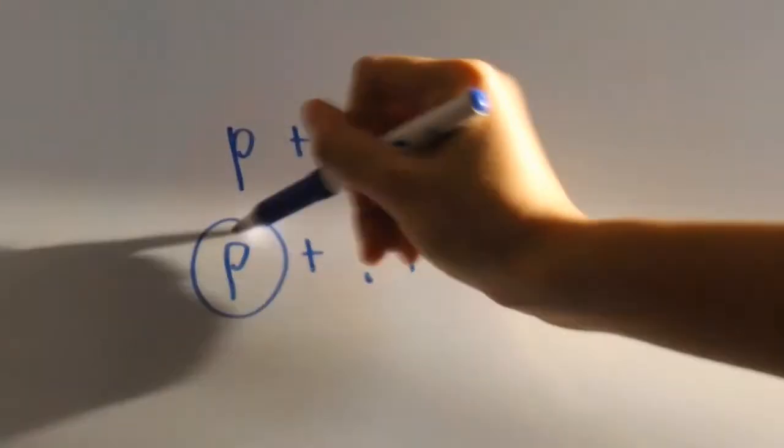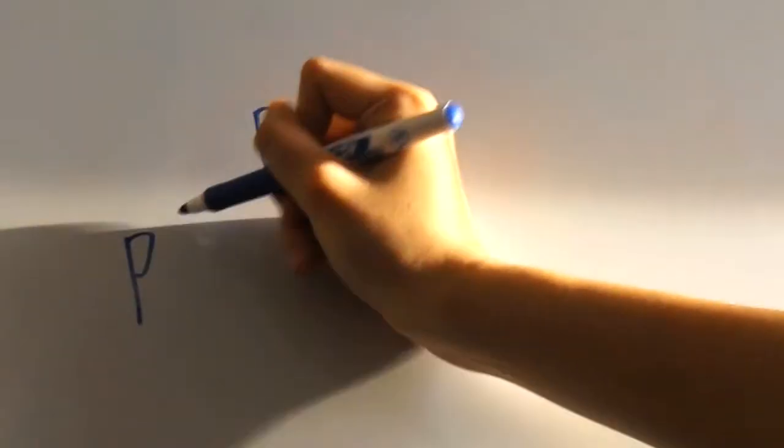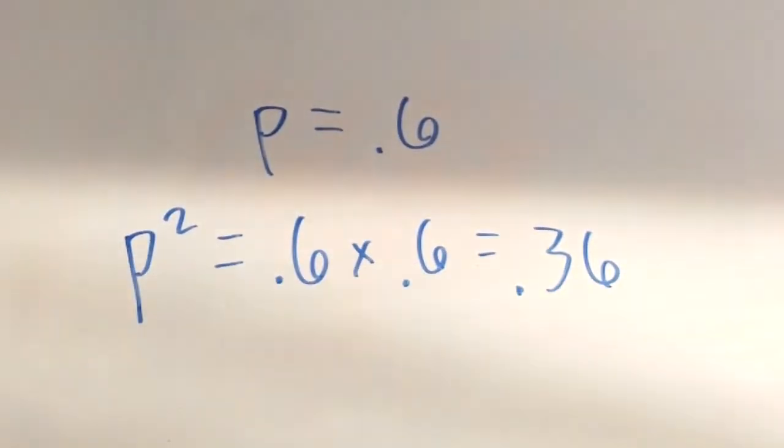Now that we've got q, we can use 0.4 as a value to figure out what p should be. 0.4 plus 0.6 is 1, so p must be 0.6. And since we know that p is 0.6, we can find out p squared by squaring 0.6, which gives us 0.36.